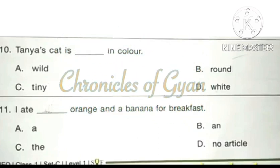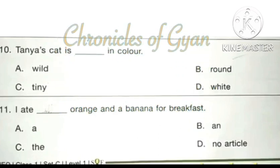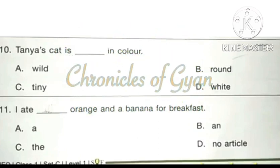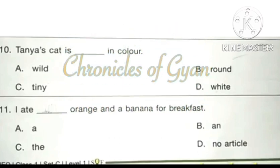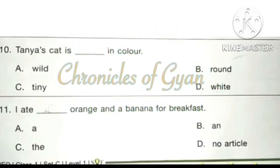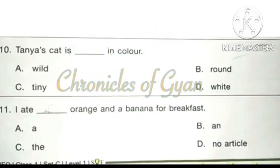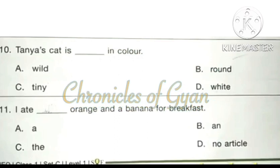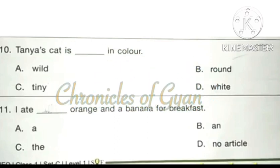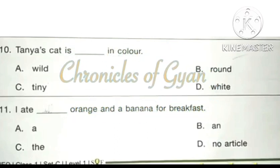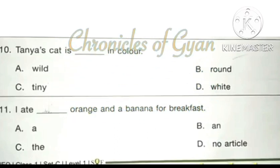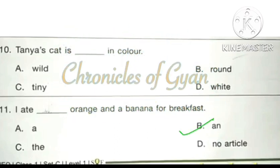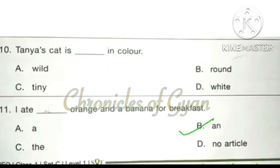Question 11: I ate dash orange and a banana for breakfast. Orange starts with a vowel, therefore we have to use 'an'. The correct answer is: I ate an orange and a banana for breakfast.